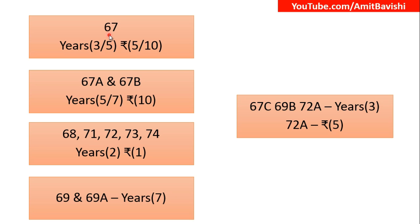So the sections covered in this part are: 67, 67A, 67B, and 67C; then 68, 69, 69A, and 69B; then 71, 72, 73, and 74 — with section 70 not appearing in the penalty exam questions. And there is also the additional section 72A covered here.